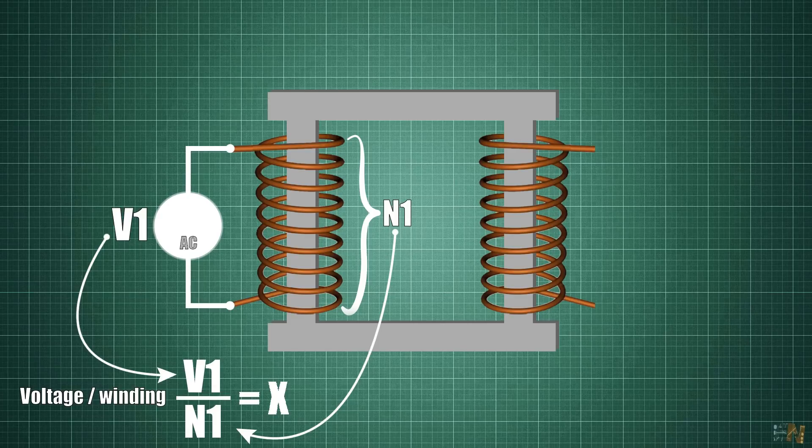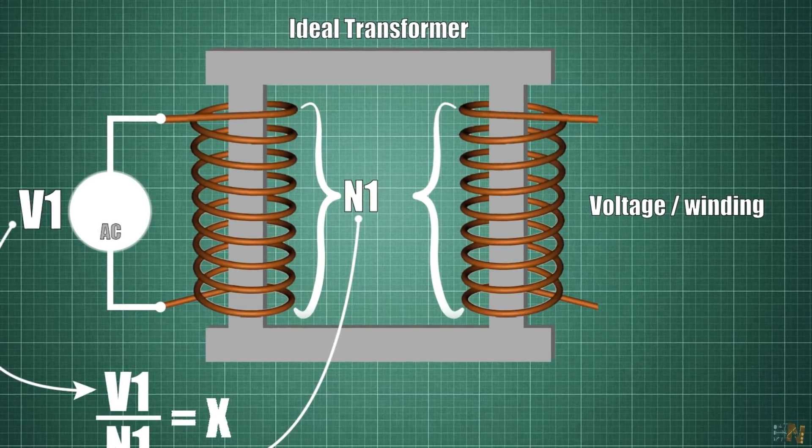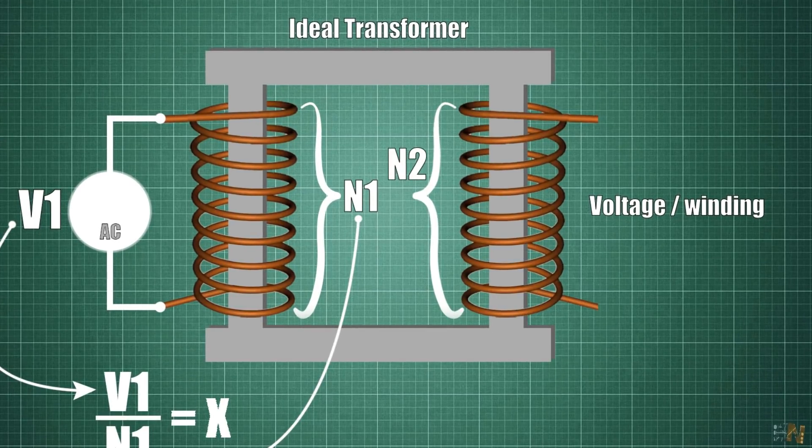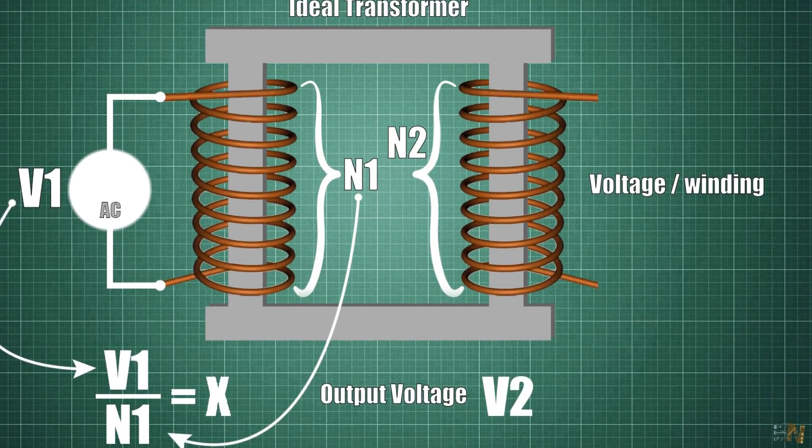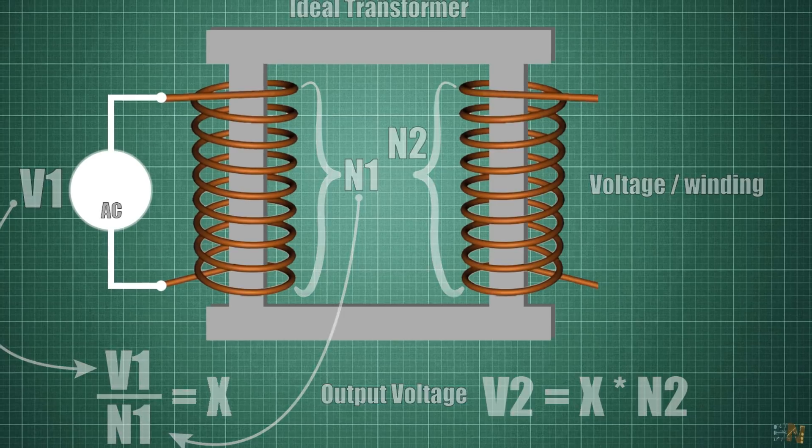So this voltage per winding is the same on the secondary coil, considering an ideal transformer. But the secondary coil has a different amount of windings with the name of N2. So in order to get the output voltage, we multiply the voltage drop per winding by the amount of windings. So V2 is equal to X by N2. So these are our first formulas.